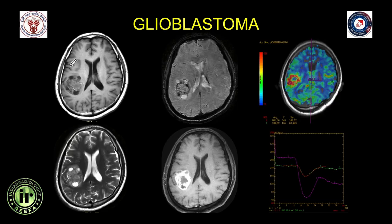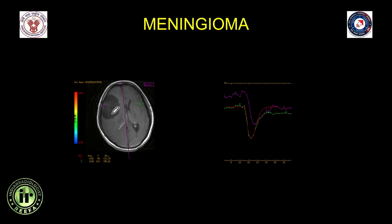An elderly patient with a heterogeneous right parietal lesion showing blooming (from hemorrhage/hemosiderin), heterogeneous post-contrast enhancement, and very high CBV of approximately 3.4 compared to contralateral white matter with approximately 50% baseline recovery, consistent with a high-grade neoplasm. A meningioma case similarly shows high rCBV compared to contralateral white matter and lack of complete baseline recovery due to absence of blood-brain barrier in this extra-axial lesion.